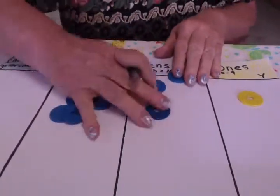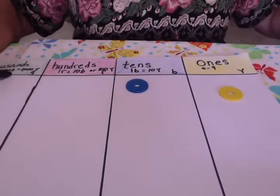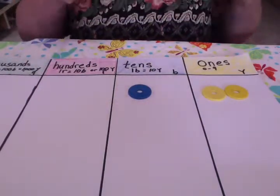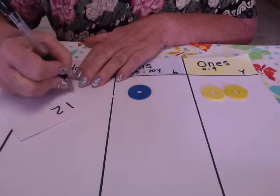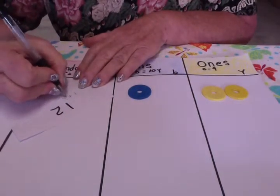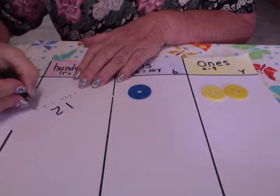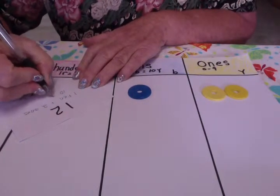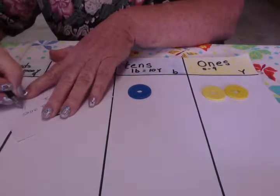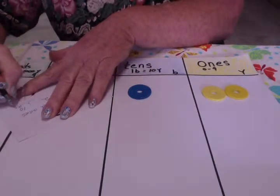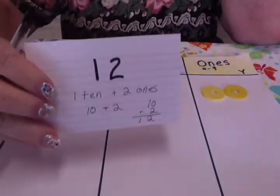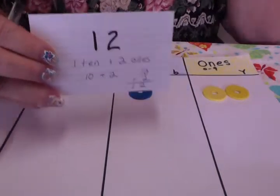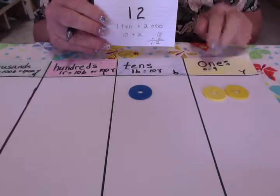Then we have the number 12. Let's see, while I'm setting the 12 up, if you can tell me what I should be writing. I should be writing that we have one 10 plus 2 ones, or 10 plus 2. And 10 plus 2 is the same thing as 12. Is that what you were thinking? Good. We have 10 plus 2, and that gives us the 12.